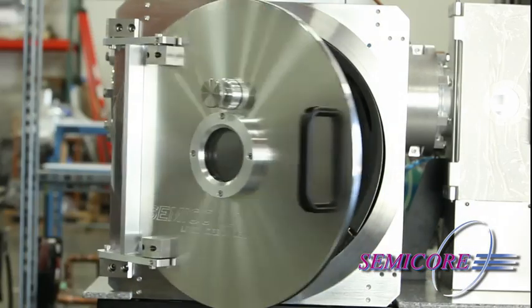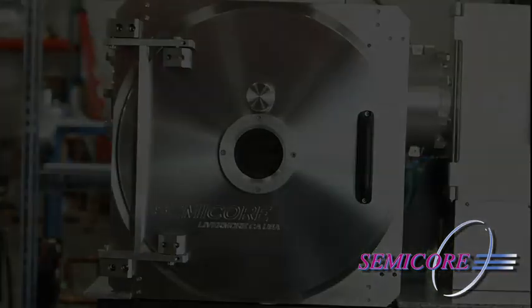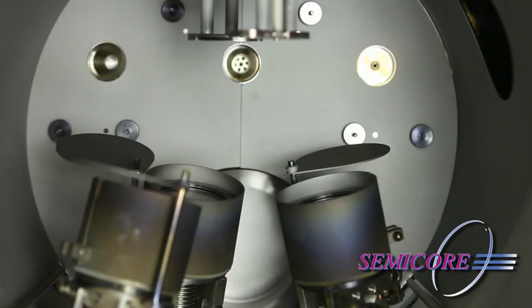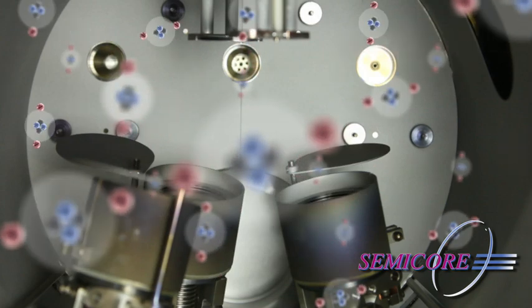For highly pure coatings, you need a clean environment with only materials of your choosing. This is why the chamber is evacuated to remove almost every molecule from the chamber. Then the chamber is backfilled with a process gas.